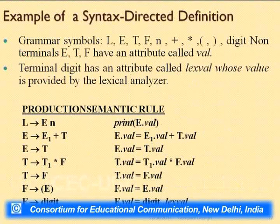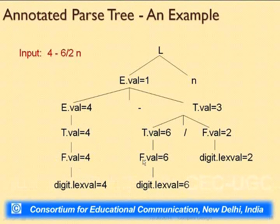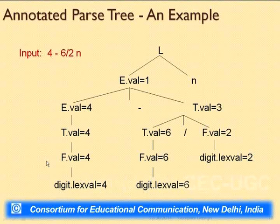Similarly, the rule for T derives T star F would be: T.val = T1.val times F.val. The key insight is that we write rules the way we want the information to travel, not the other way around. The rule for T derives F is also valid wherever that production appears — it is not specific to a single subtree. For the rule E derives E plus T, we write: E.val = E1.val plus T.val. Rules cover all scenarios wherever the production is used.